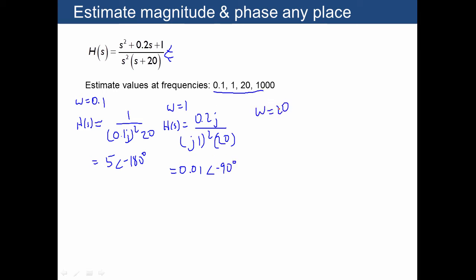Let's move on to omega equals 20. Here, j times 20 squared is much bigger than the other terms. We have j times 20 squared divided by j times 20 squared, divided by j times 20 plus 20. These cancel, and what we are left with is 1 over square root of 2 times 20. Since this is in the denominator, I'm treating that as an overall number at negative 45 degrees.